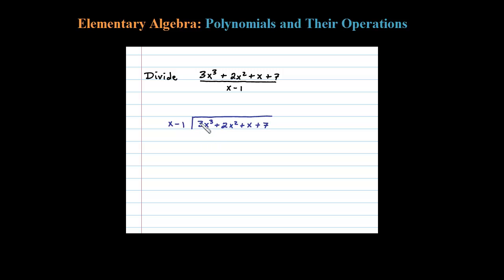Let's match that first term. What times x will give me 3x cubed? After a little bit of thought I could see 3x squared should do it. 3x squared times x is 3x cubed.